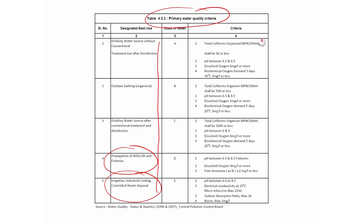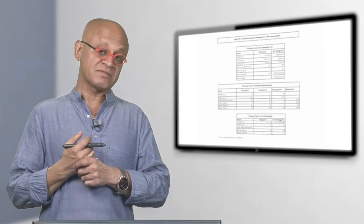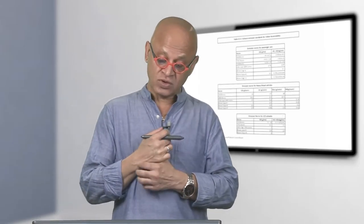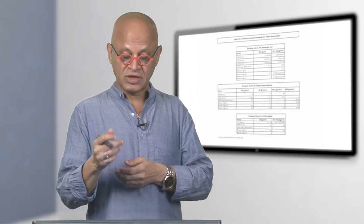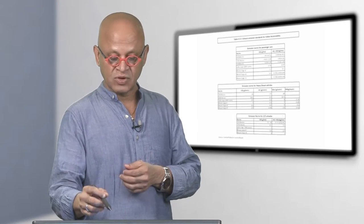Along with air quality you have to also track water quality which is being done with drinking water, outdoor breathing, source and treatment and disinfection, propagation of wildlife and fisheries, irrigation, industrial cooling controlled waste disposal. These are coliforms, pH, dissolved oxygen, biogeochemical oxygen demand.